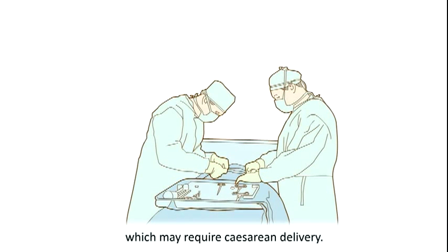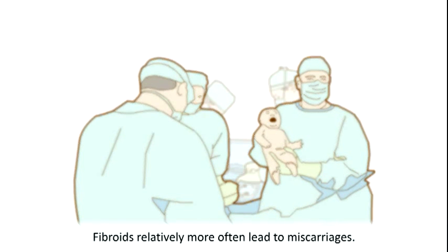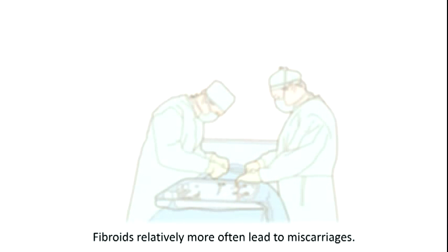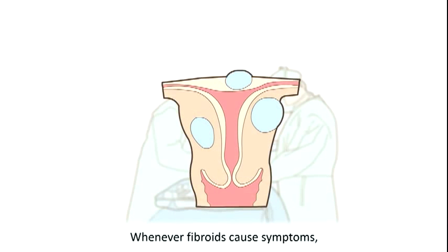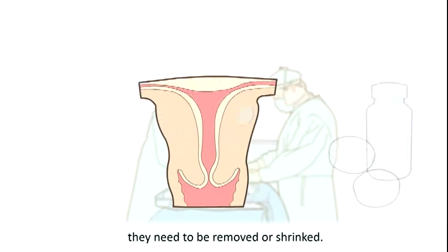Fibroids can impede normal childbirth, which may require caesarean delivery. Fibroids relatively more often lead to miscarriages. Whenever fibroids cause symptoms, they need to be removed or shrunk.